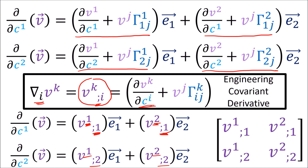We can store all of these components in a matrix, and this is why engineers think of the covariant derivative as a rank 2 tensor. The covariant derivative actually adds a covariant index to the tensor components. So all of these v components are getting a new lower index, or covariant index, and the new covariant index results from taking the covariant derivative and looking at the components of the resulting vector field.